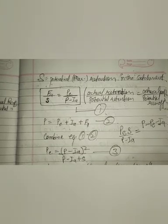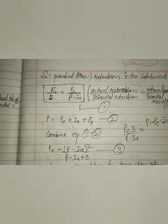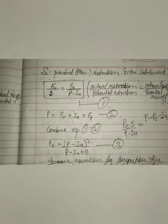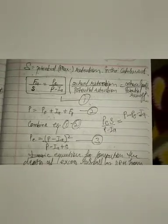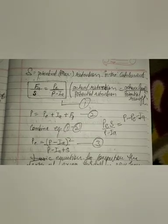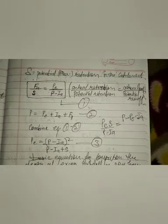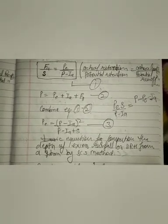We use two equations: Fa/S = PE/(P − Ia), and P = PE + Ia + Fa. Combining these two equations — from equation one, Fa equals PE·S divided by (P − Ia), and from equation two, Fa equals P minus PE minus Ia. Equating these and rearranging, we get the final equation: PE equals (P − Ia)² divided by (P − Ia + S).